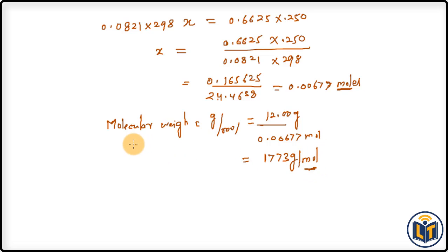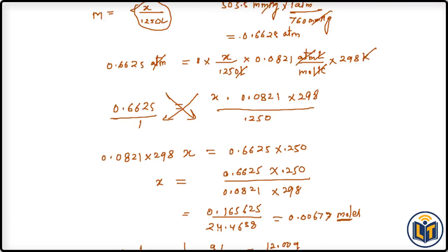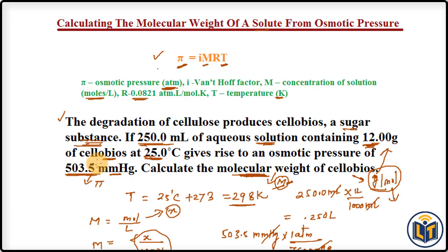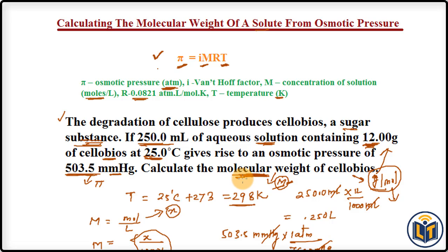In summary, I calculated the molecular weight of cellobiose using the osmotic pressure formula. First, I converted temperature from °C to Kelvin. For concentration, I assumed moles of solute = X. Once I solved for X, I applied the molecular weight formula — dividing mass by moles — to get the final answer.